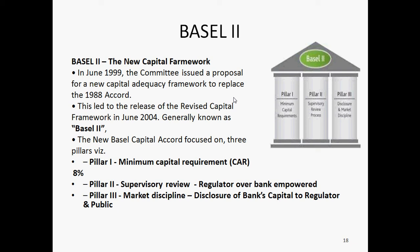The third pillar is disclosure and market discipline. According to this, the bank's stakeholders — customers, government, or any shareholders — can check whether the bank is maintaining this capital adequacy ratio or not. Along with this, the bank has to publish its financial statements in leading newspapers or publications about its balance sheet — what cash it is maintaining, what the risk-weighted assets are, and what the capital, market risk, and operational risk calculations are.